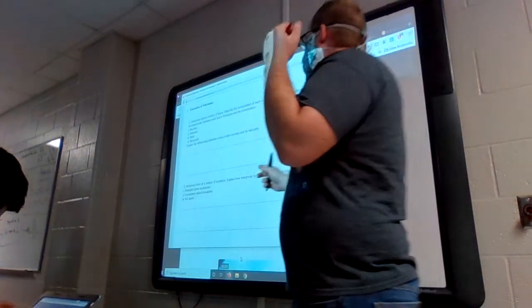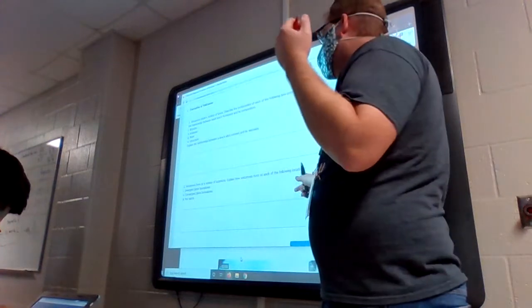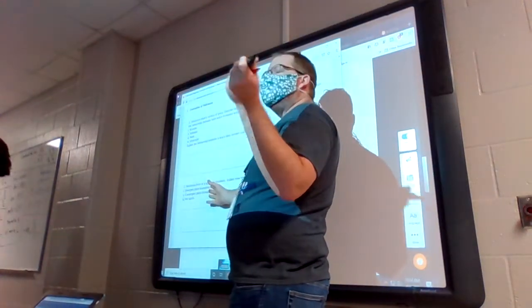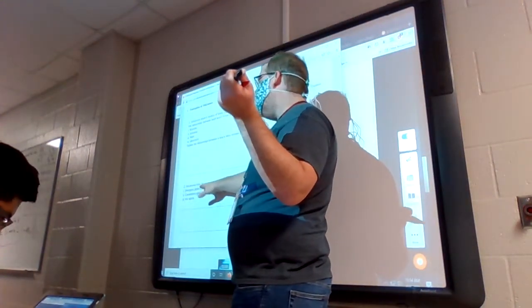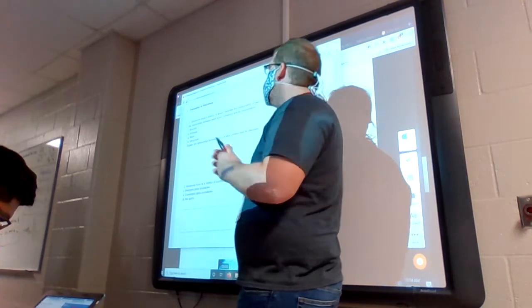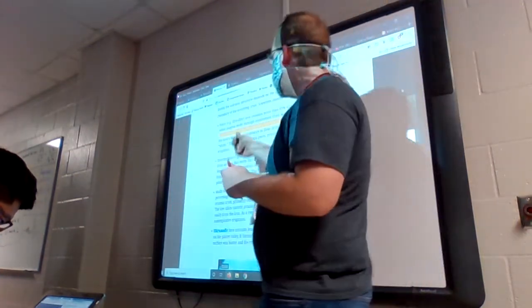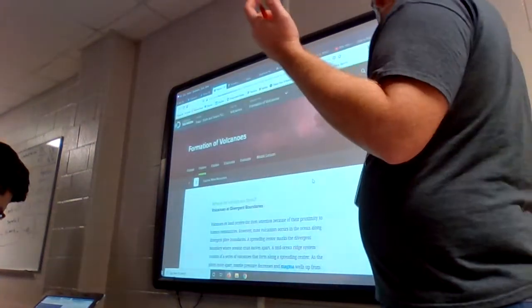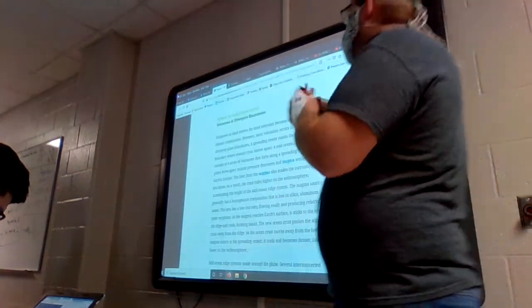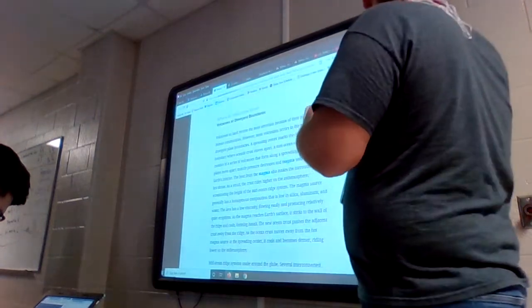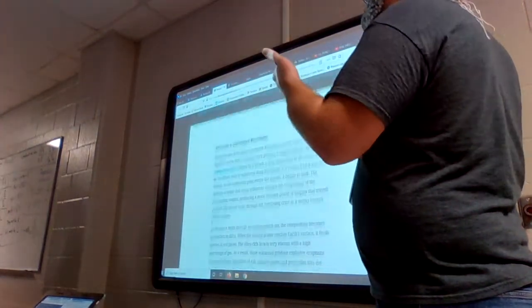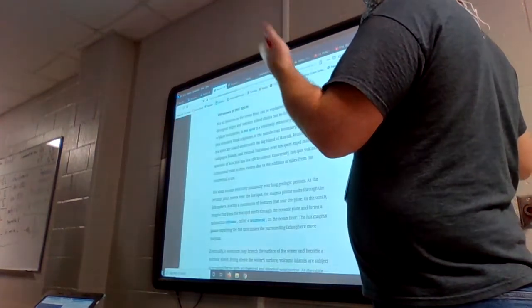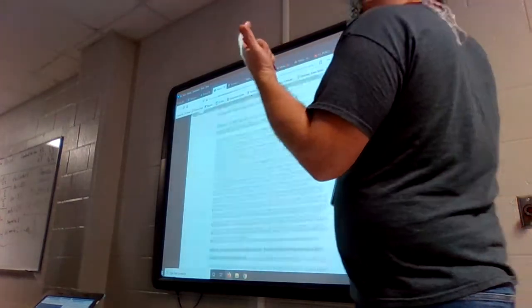Number two: volcanoes form in a variety of locations. Explain how volcanoes form in each of the following locations. And notice they're talking about plate boundaries. So we got divergent plate boundaries, convergent plate boundaries, and hot spots. That should be on the second page. So if you click and go to page number two, they have different paragraphs for each of those: volcanoes with divergent boundaries, volcanoes at convergent boundaries, and volcanoes at hot spots. So answer these two questions.